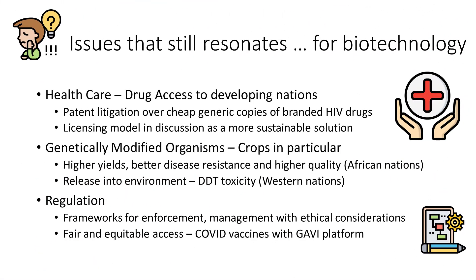Biotechnology brings along its benefits, lowering our environmental footprint and helping treat disease and illness. As an evolving field of science, main concerns revolve around ethical, safety, bioterrorism and environmental issues. Issues that resonate include health care and equitable access, such as HIV drug access to developing nations in Africa, with looming patent litigation over cheap generic copies of branded HIV drugs by big pharma companies — options including having a licensing model are seen as a more sustainable solution. For environmental concerns, genetically modified organisms, crops in particular, might bring along higher yields, better disease resistance, higher quality, and help in combating droughts and food security. In Western nations, DDT toxicity and its release into the environment has a chance of upsetting food chains with bioaccumulation. Finally, frameworks for enforcement and management with ethical considerations including fair and equitable access — one instance being the fair distribution of COVID vaccines with the Gavi platform.